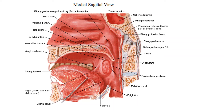So the roof of Waldeyer's ring is formed by the pharyngeal tonsil, the floor by the lingual tonsil, and the lateral wall by the palatine and tubal tonsil. This lymphatic ring is important because it helps in the defensive mechanism of the respiratory and alimentary system by destroying the entry of microorganisms from the external environment.